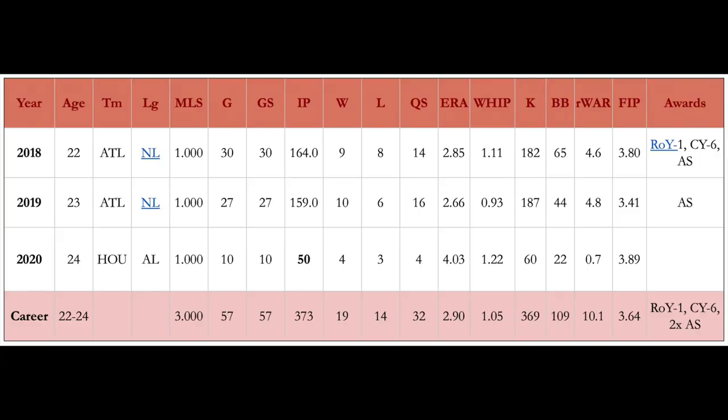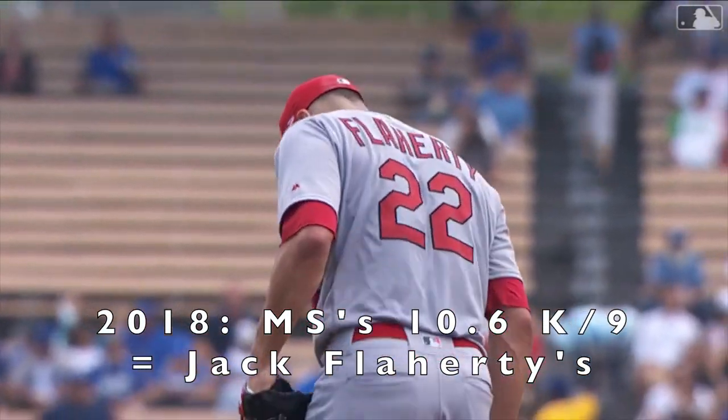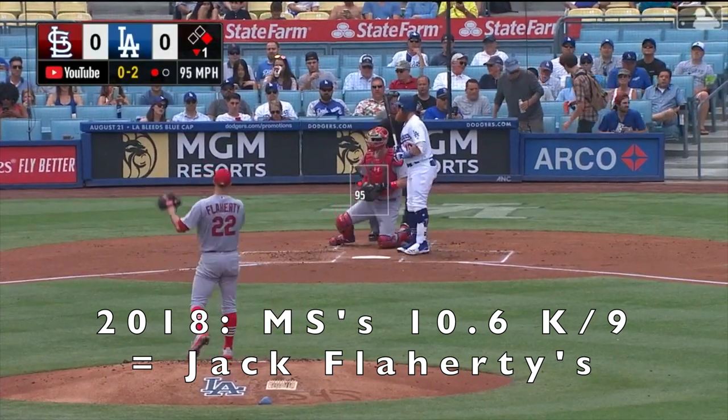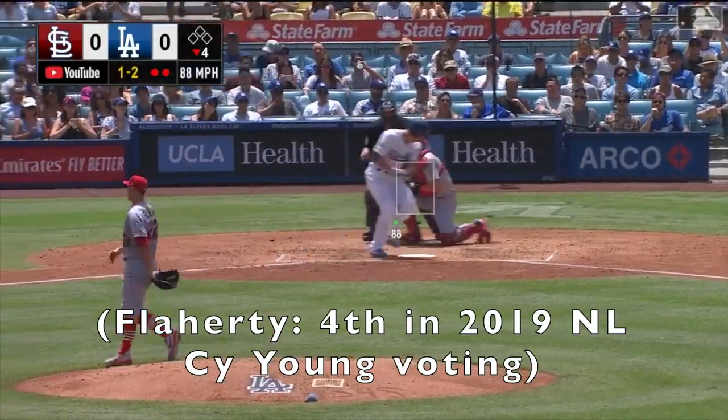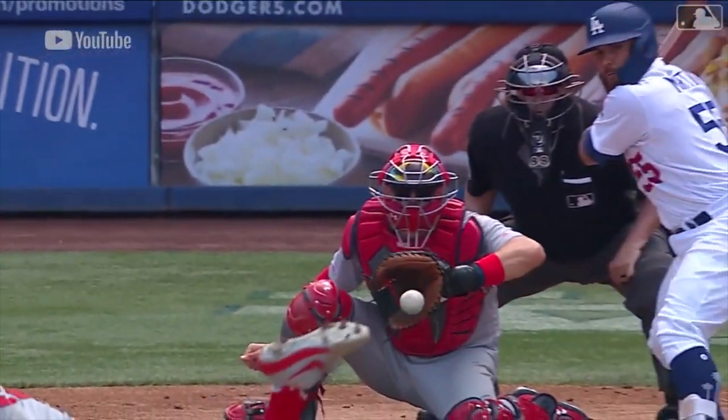Now let's look at his first season — his rookie season in 2018. He qualified with 164 innings. Barely qualified, but he qualified, and that's all that matters. He had a 2.85 ERA, which is very good. His WAR is great, and his awards are great too. He was Rookie of the Year, and he got 6th in the Cy Young. So overall, he's a two-time All-Star, he's had Cy Young votes, and he's won Rookie of the Year. That's going to be a big distinguisher in the market — it'll separate the elite from the really good guys.